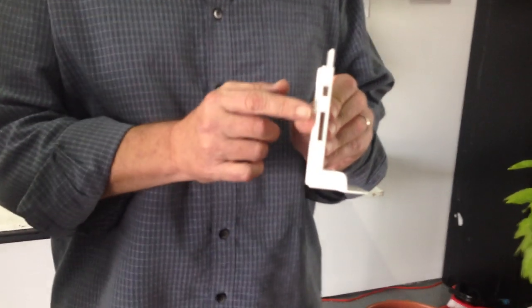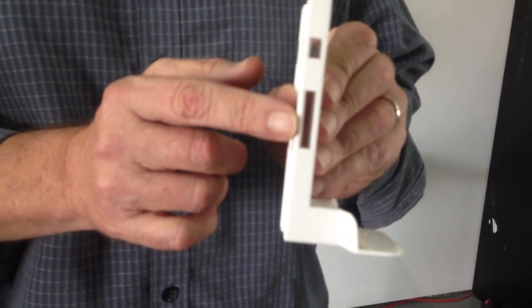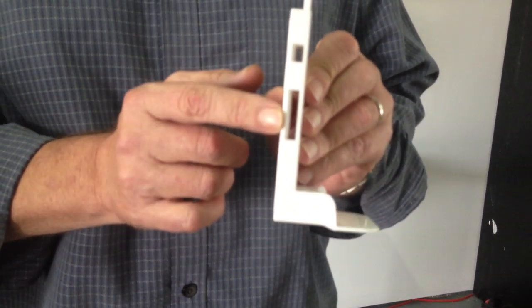On the side, you will notice two slots. The top slot is meant for a zip tie. The bottom slot is meant for a five-foot nylon adjustable strap.